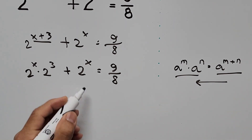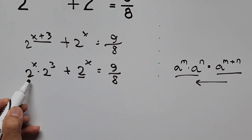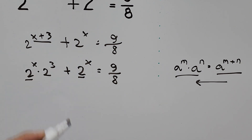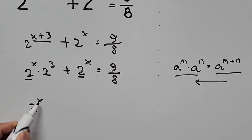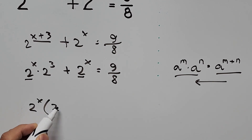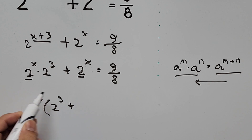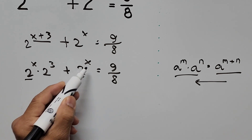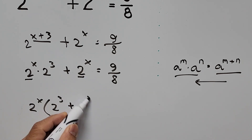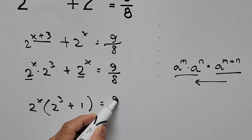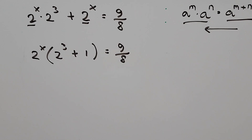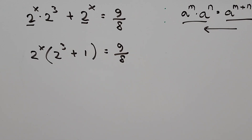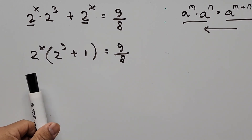From here, 2 to the power of x is common to both terms on the left, so we factor it out. This gives us 2 to the power of x times the quantity 2 cubed plus 1, and the right-hand side is 9 over 8. From here we can isolate the exponential variable term.